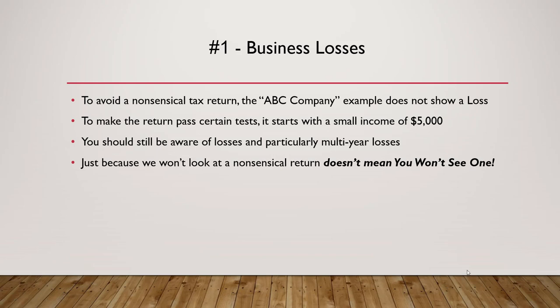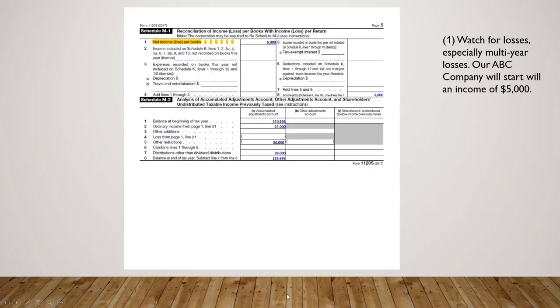To avoid a nonsensical tax return, ABC Company is not going to start out with a loss — we're going to start with a small income of $5,000, a return that could actually land on your desk and would have passed muster with the IRS. You should still be aware of losses, particularly multi-year losses. Just because you don't see a nonsense return today doesn't mean you won't in real life — you probably have, and you probably will.